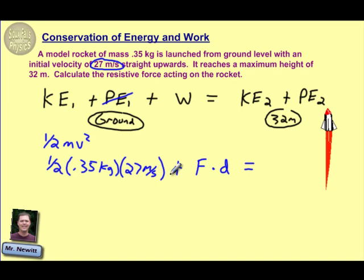when we reach that 32 meter mark, they do tell us that is the maximum height of the rocket. So we can assume at that maximum height that the rocket instantaneously stops moving. It has no velocity. So in that case, I have zero kinetic energy. The only thing I have to worry about here is my potential energy, which is mgh. So 0.35 is the mass, times 9.8, times the height of 32 meters.